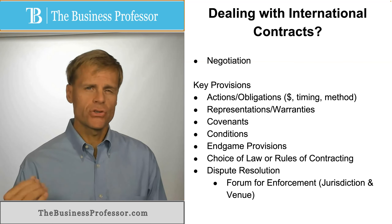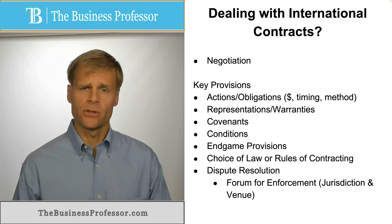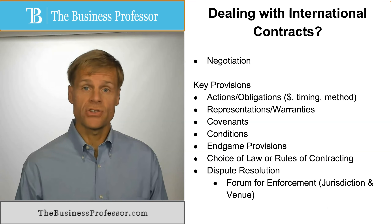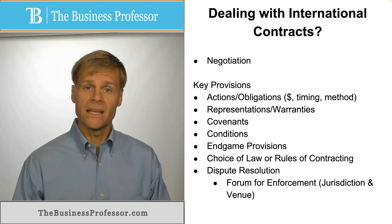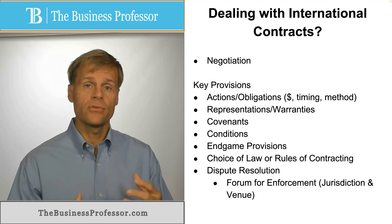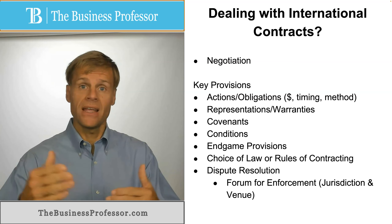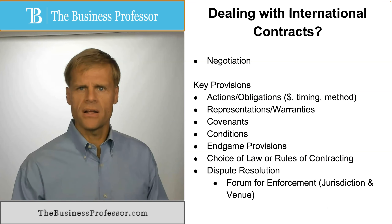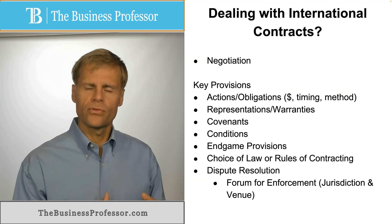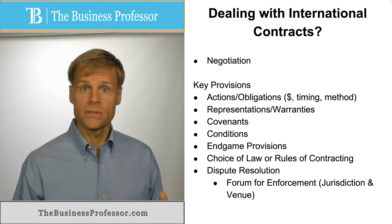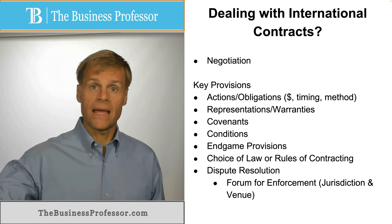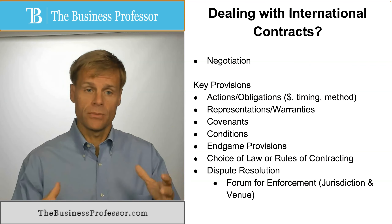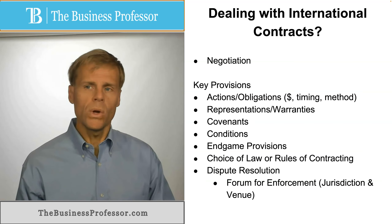What are international contracts and what is the best way of dealing with them? An international contract is simply a contract between two nations or between individuals who are citizens of, members of, living in or from different nations. The essence of an international contract is that the rules of contracting are not uniform or uniformly applicable to both individuals — there may be rules applicable to a person in a foreign nation and different rules applicable to the person in the present nation.